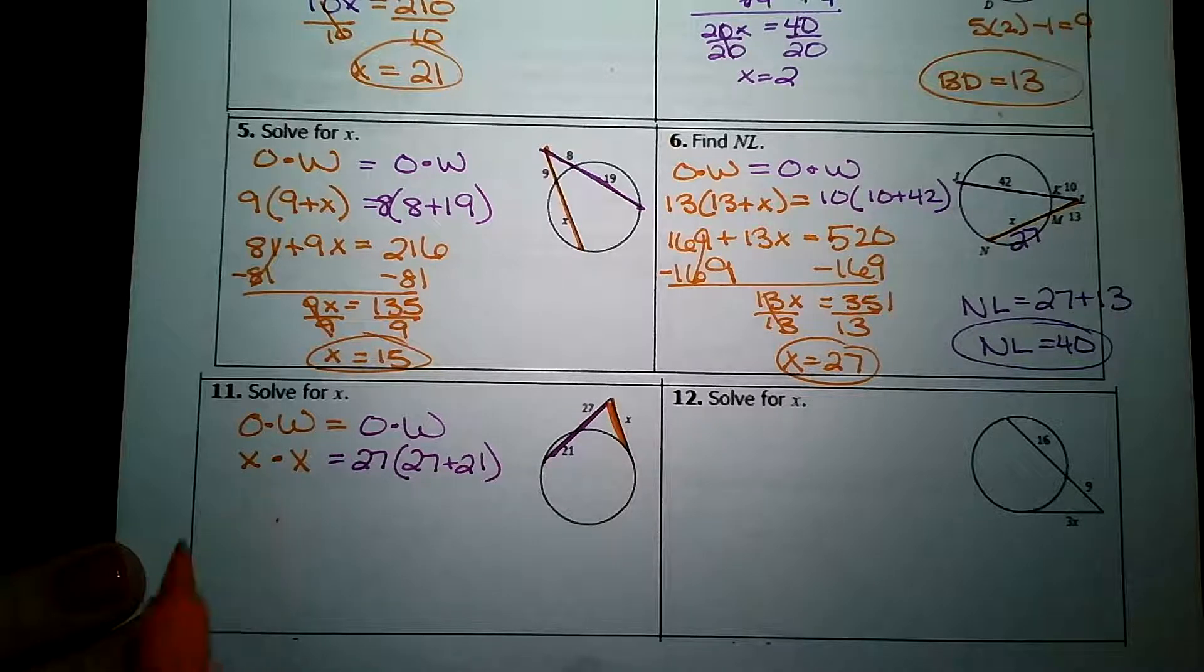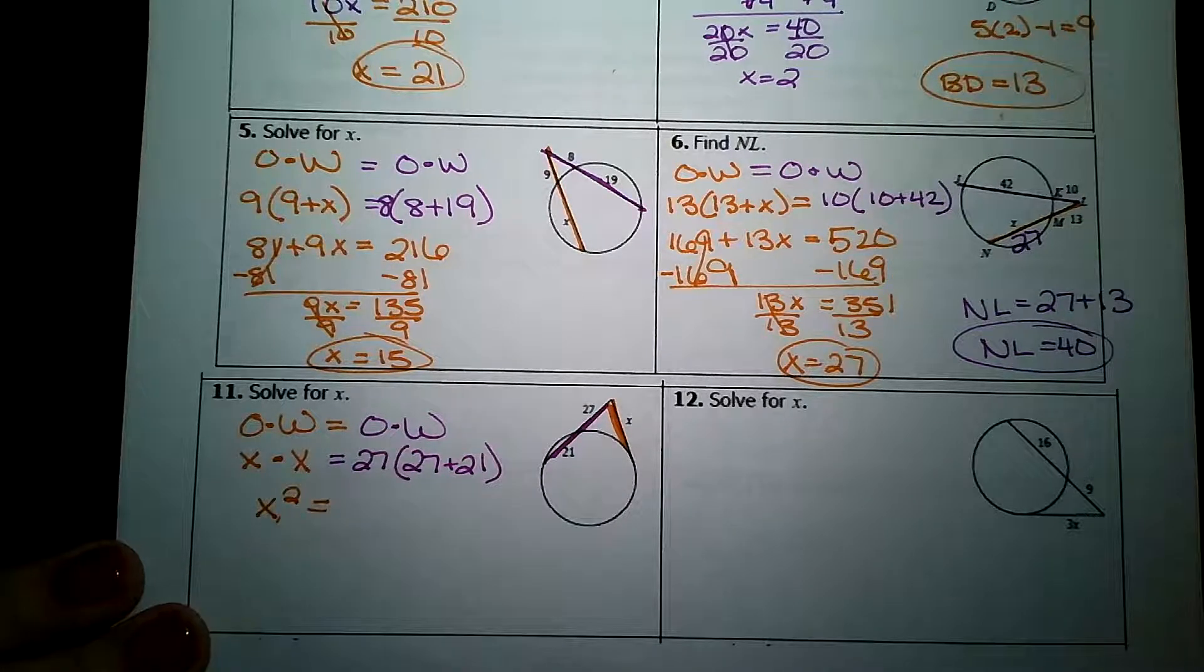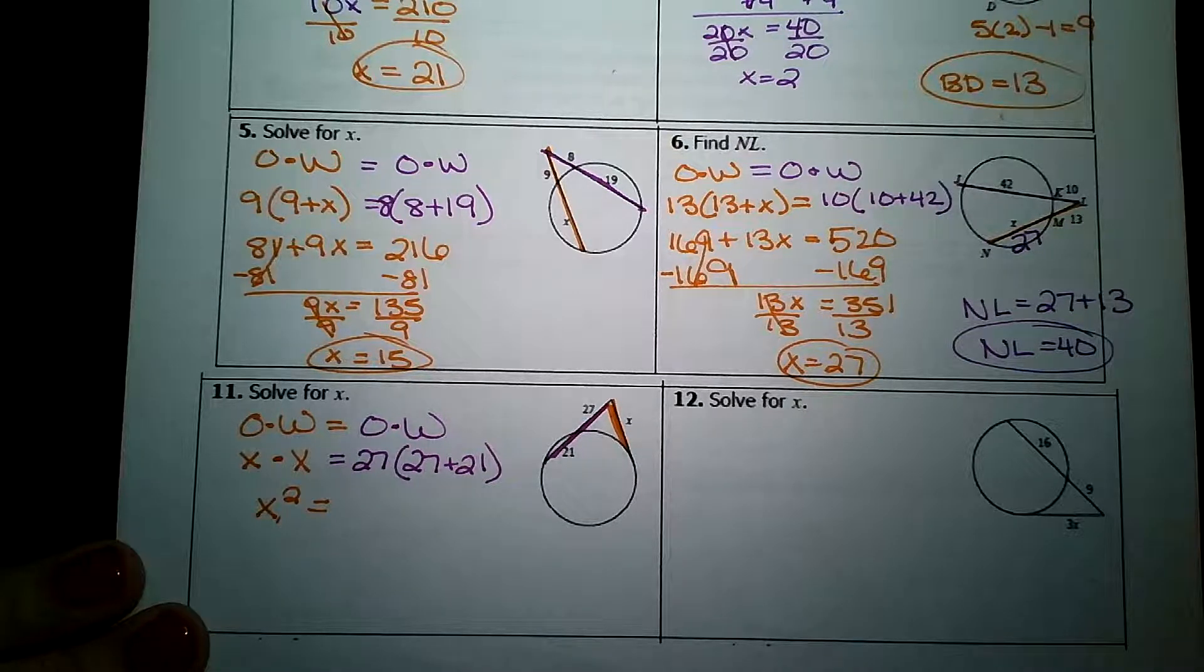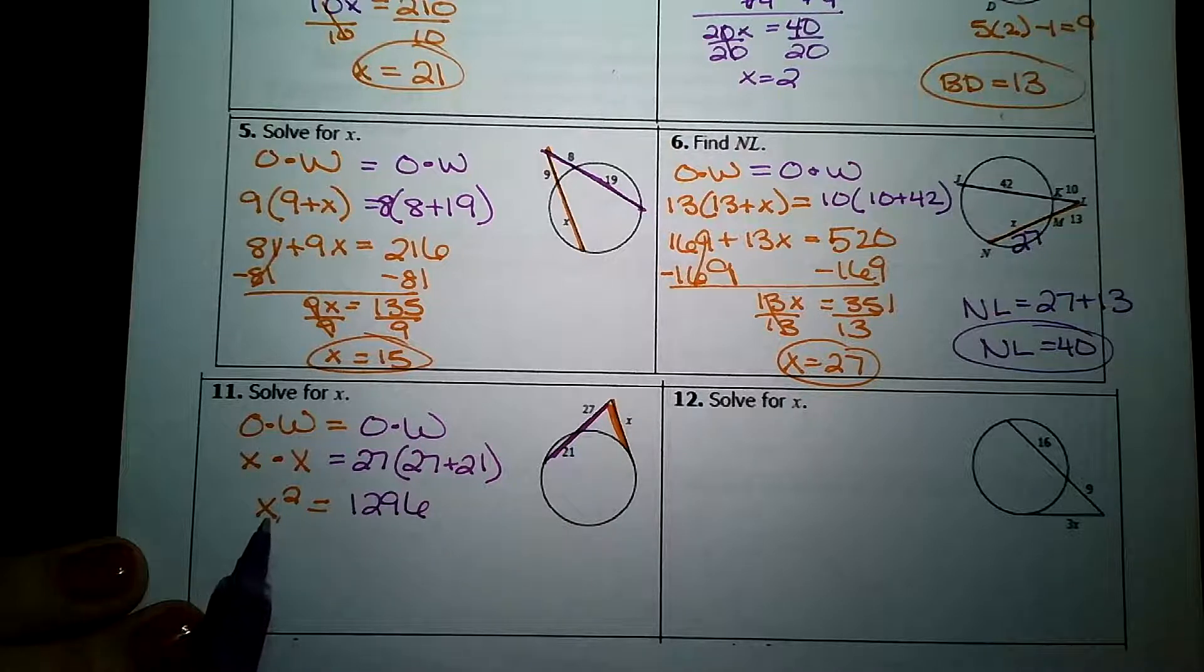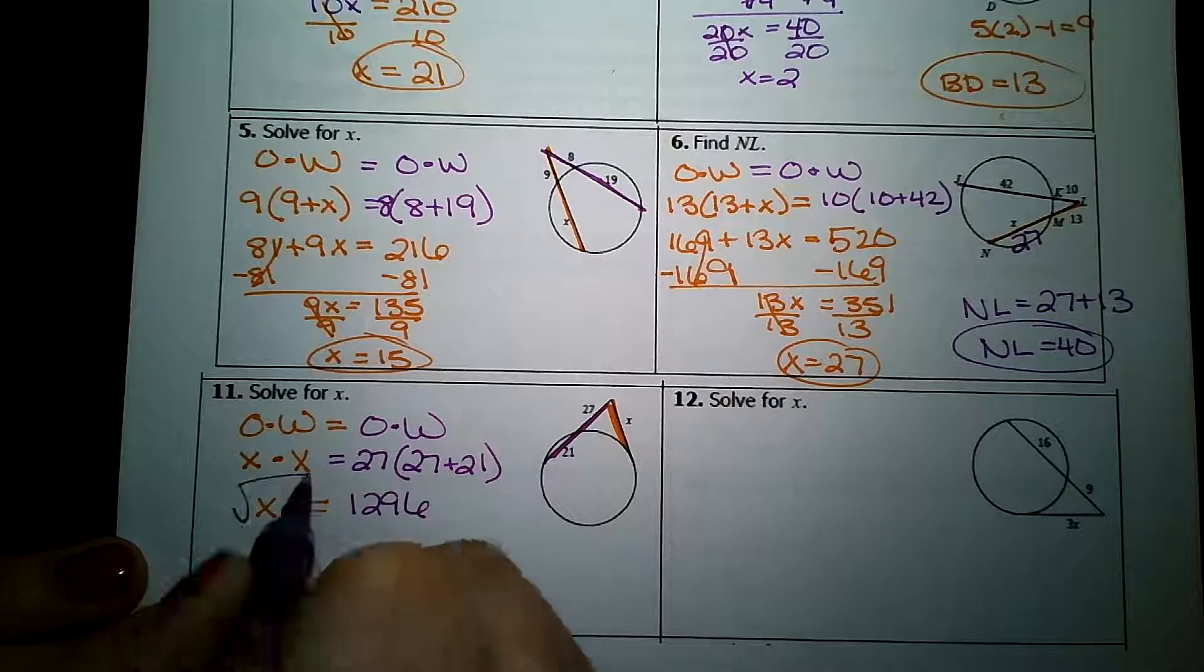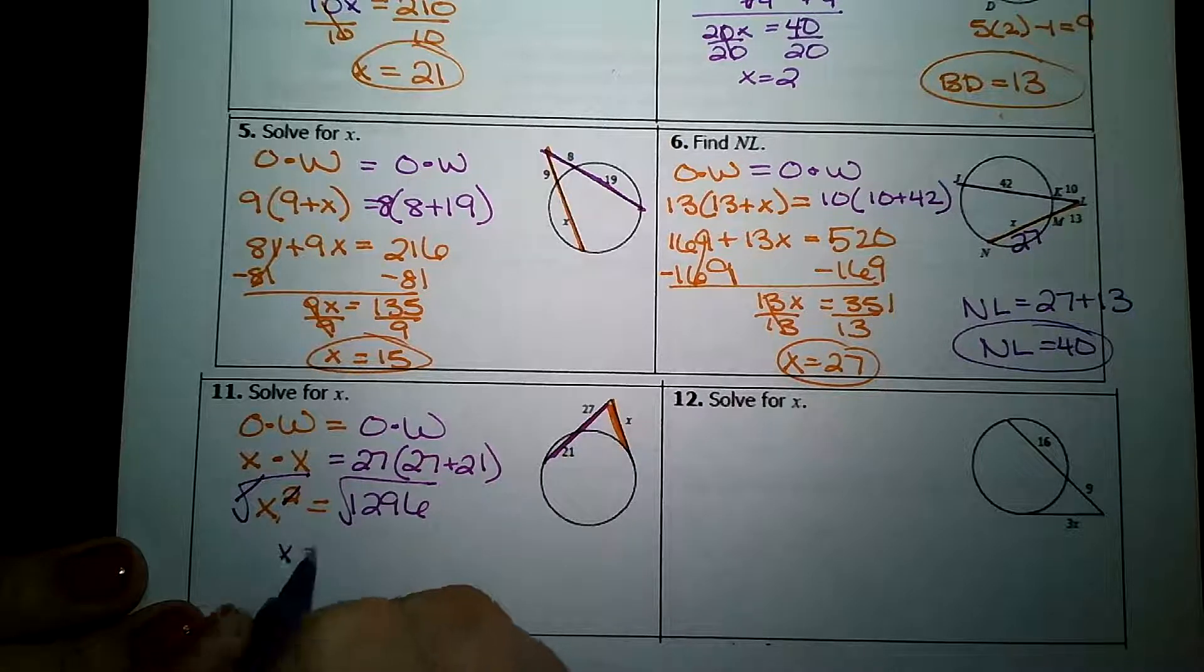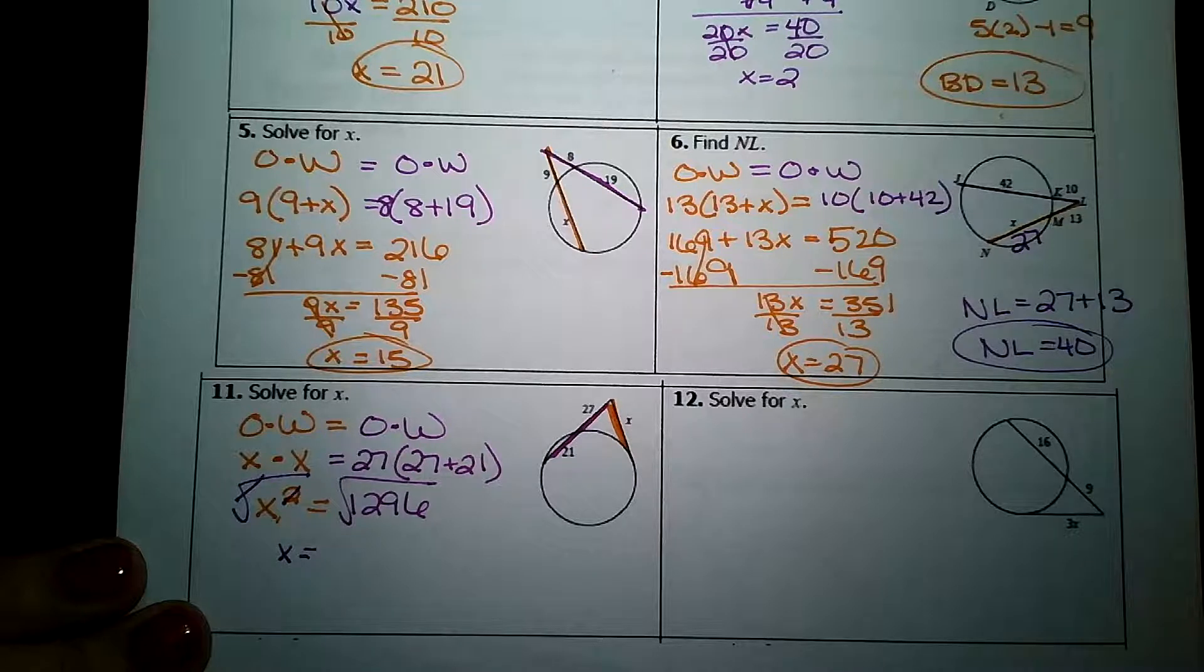Well, whenever you multiply something by itself, that's called squaring. x times x is x squared. Here on the right, let me do some arithmetic. 27 plus 21 is 48. 48 times 27 is 1,296. In order to get x alone here, I need to use the inverse of a square. I need to use a square root. A square root and a square cancel each other out. And the square root of 1,296 is 36.